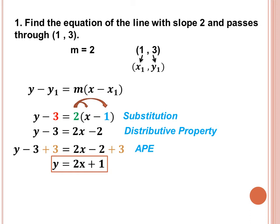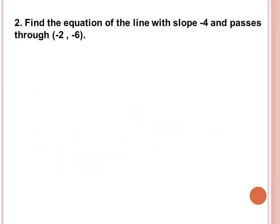We can also convert this into standard form. Now for Example 2: find the equation of the line with slope negative 4 and passes through the point (negative 2, negative 6).